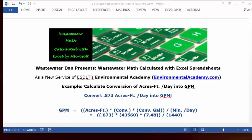So the numbers will be: acres per foot is 0.873, the conversion factor to acres is 43560, the conversion factor to gallons is 7.48, and the number of minutes per day is 1440.